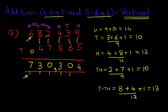We can even put a comma here between the thousands and the hundreds. And that is our answer. Seven hundred and thirty thousand three hundred and four. Seven hundred and thirty thousand three hundred and four.